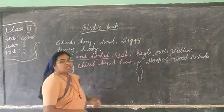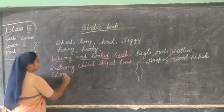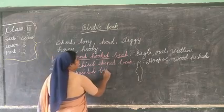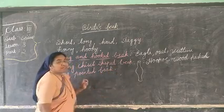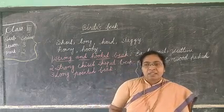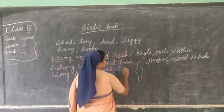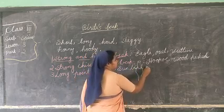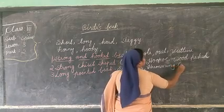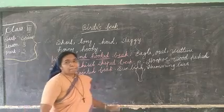The next type of beak is the long pointed beak. Where can we find this kind of beak? We can find it in the sunbird and the hummingbird. These two birds have got this long pointed beak.